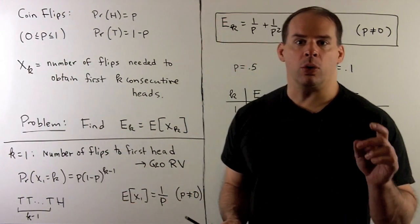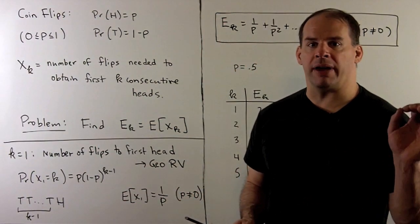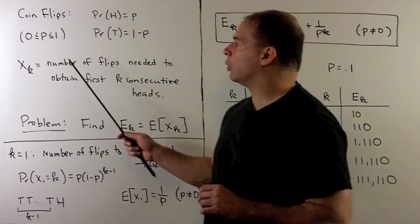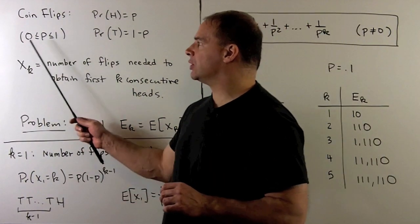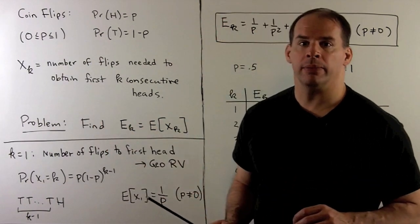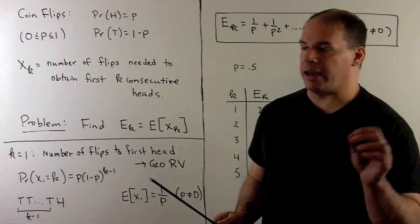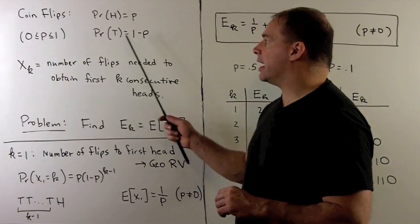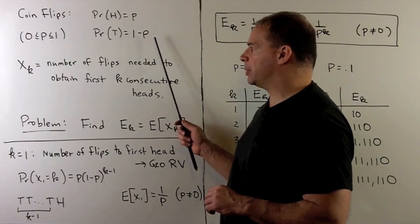For a coin, the probability of a head is going to be equal to p, where p is between 0 and 1 inclusive. Then the probability of a tails is 1 minus p.